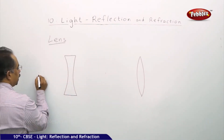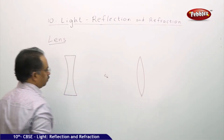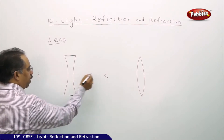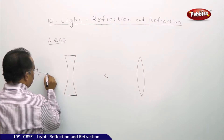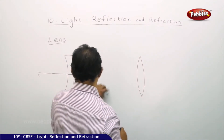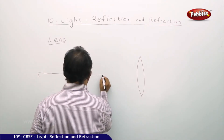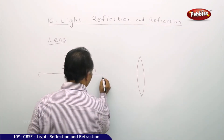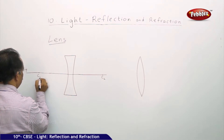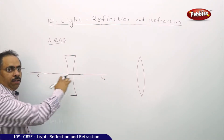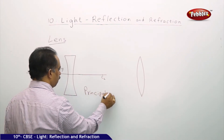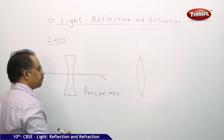Let us rename them as C1 and C2. These two are the two centers of curvature. If I join these two points by an imaginary line, we will call this as the principal axis. This is the principal axis for this particular lens.